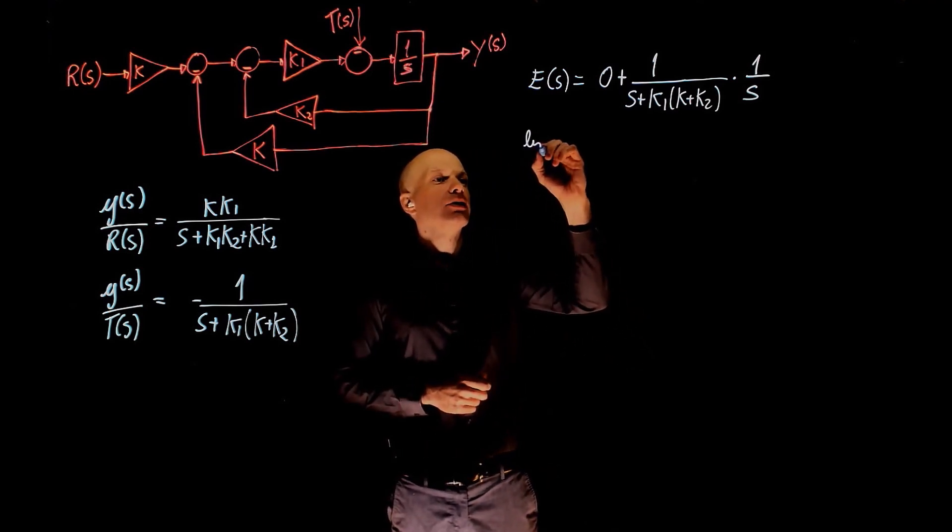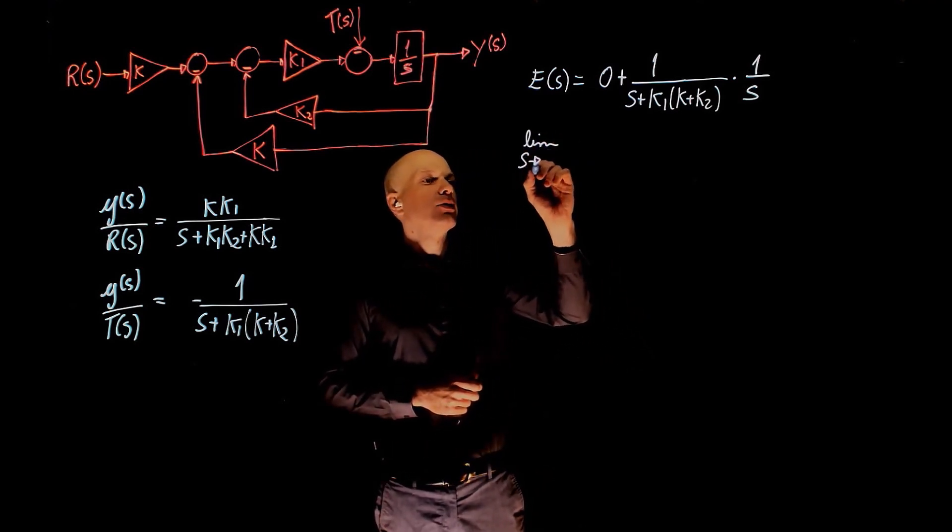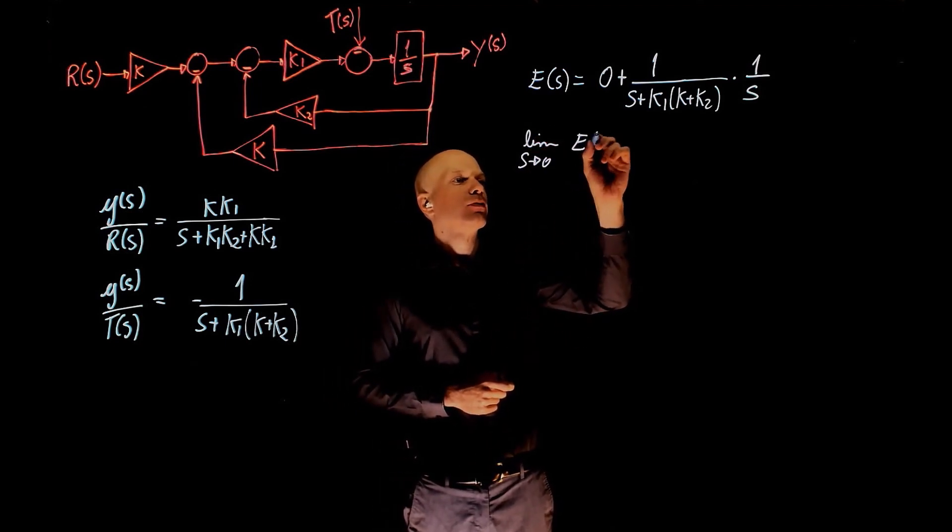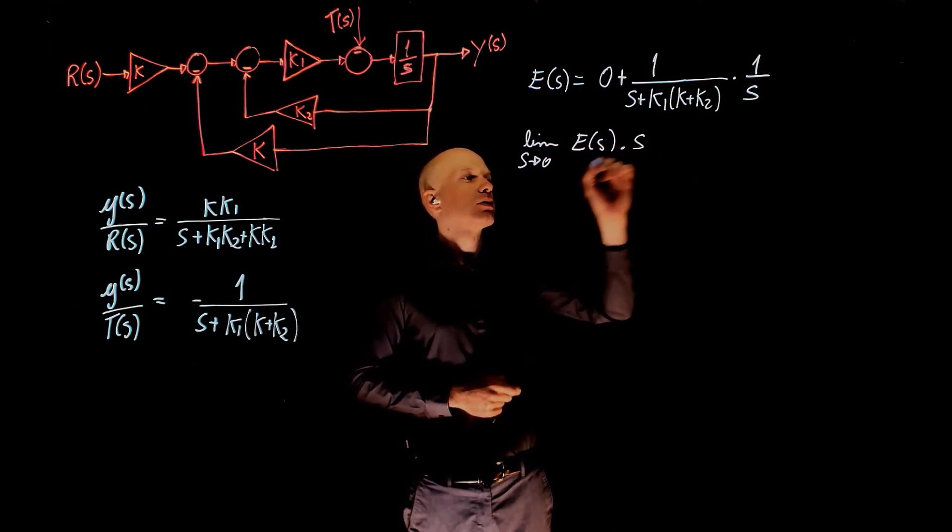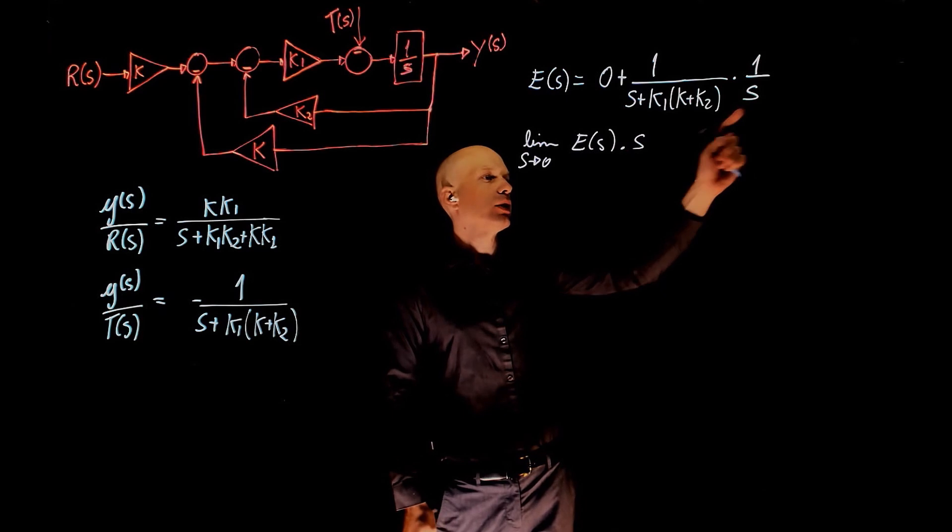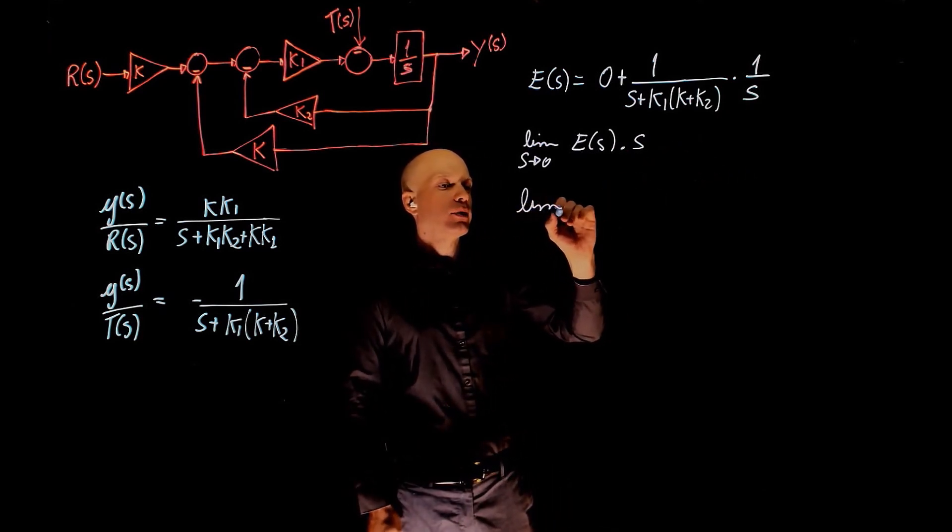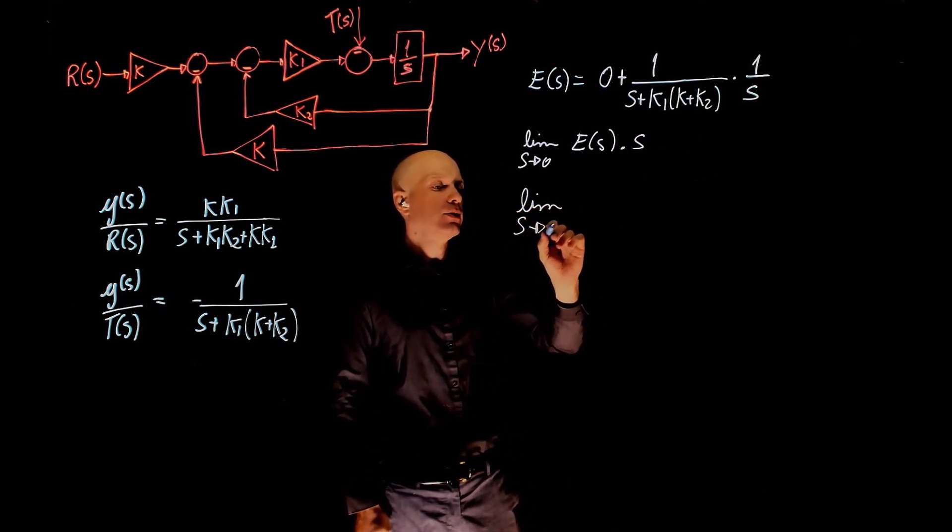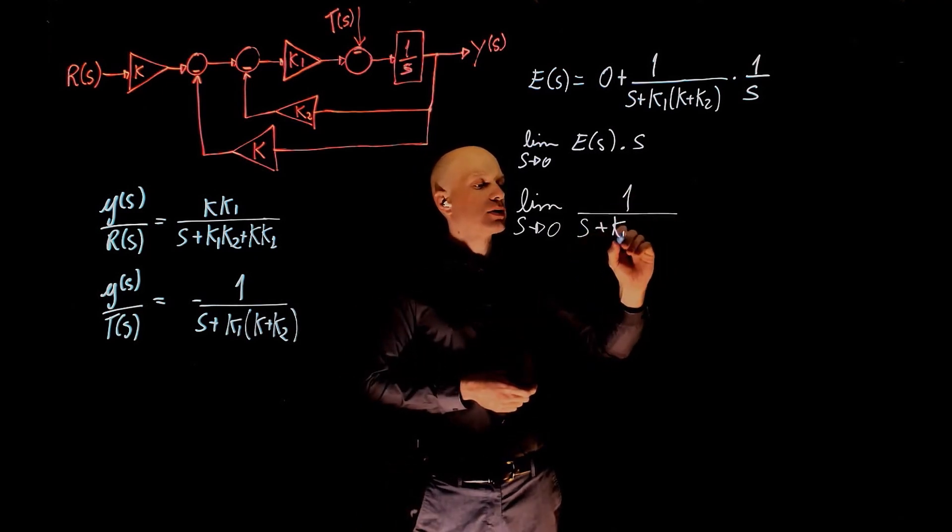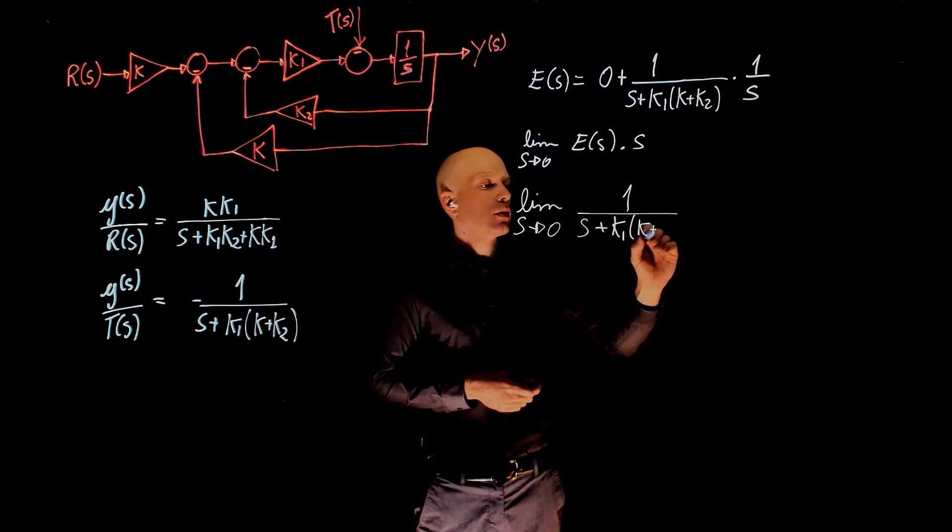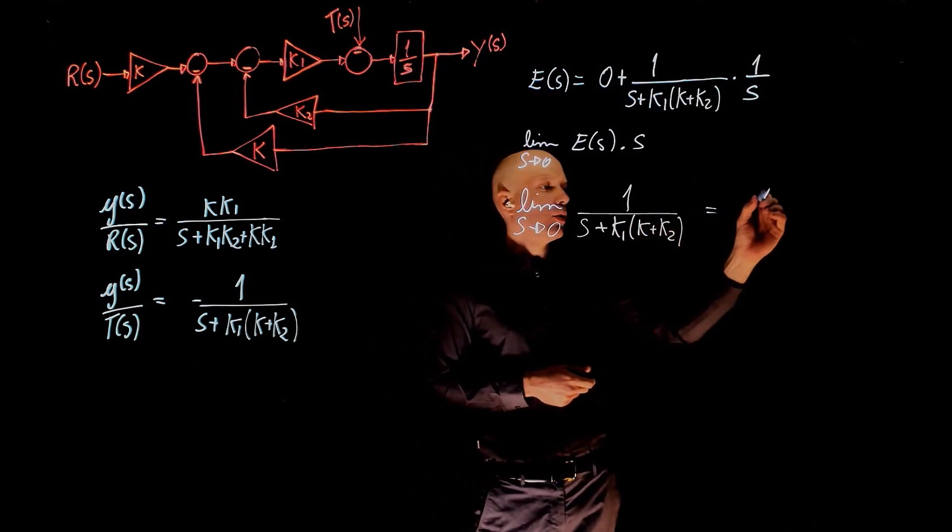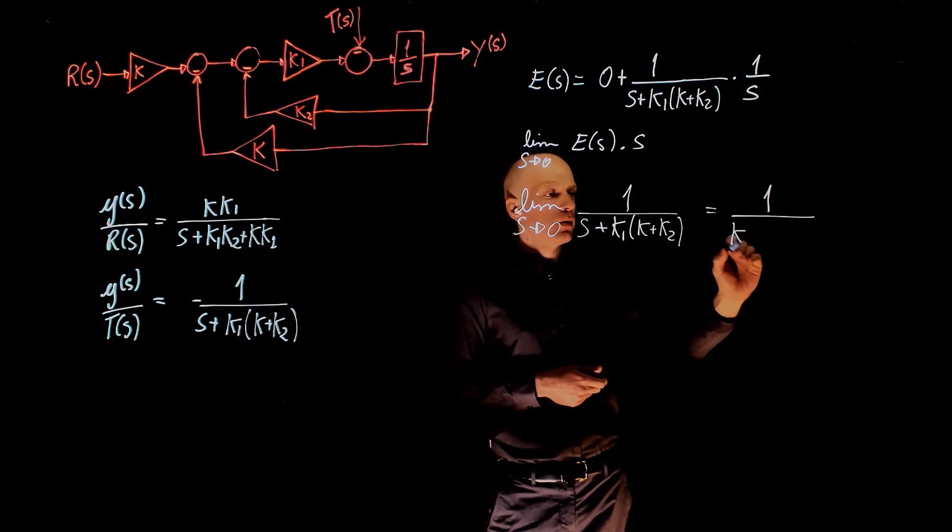The steady state error is now the limit when s tends to 0 of e of s times s. So this s here will cancel that 1 out, and you are left with the limit when s tends to 0 of 1 over s plus k1 k plus k2. And this is equal to 1 over k1 k plus k2.